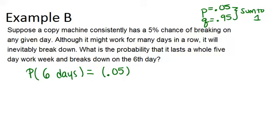That should be 0.95, that was the probability of failure, which in this case is the copier not breaking down. So it doesn't break down for five days, that's 0.95 to the fifth power. And multiply that by the probability of success, which is when it breaks down. And that is 0.05. And that happens on the sixth day.